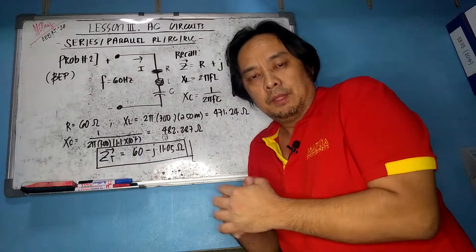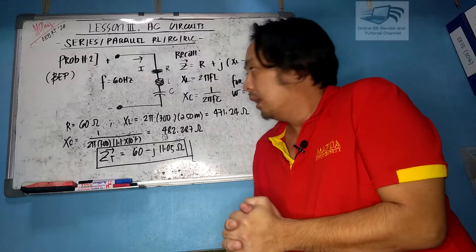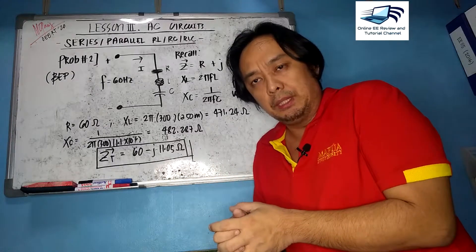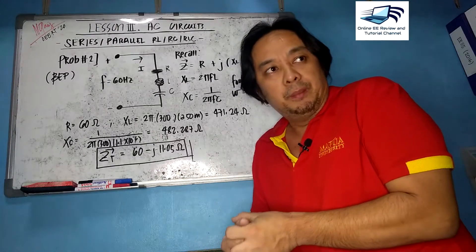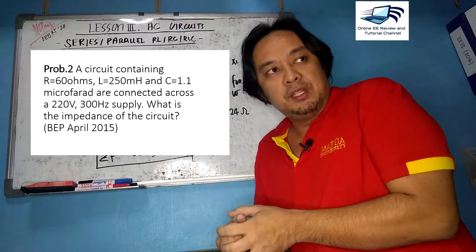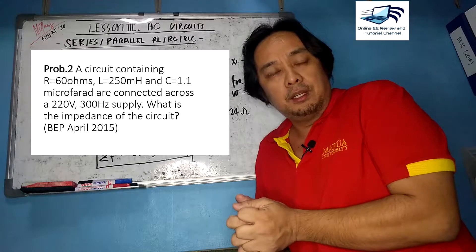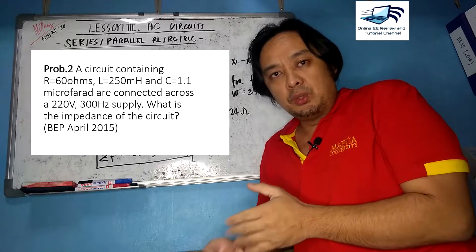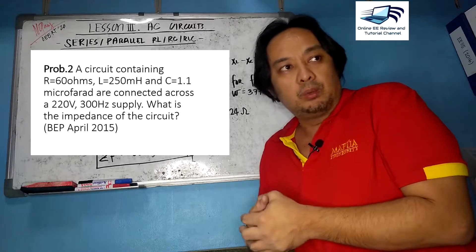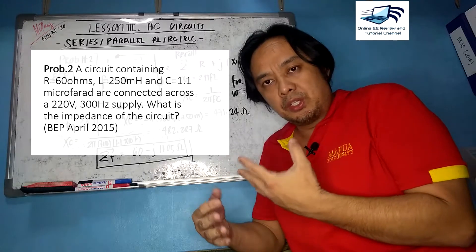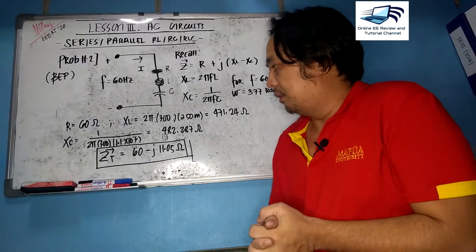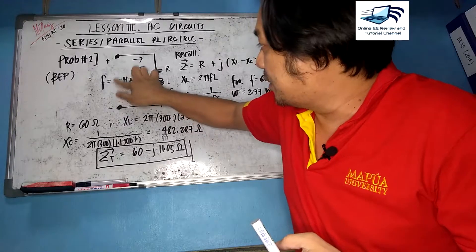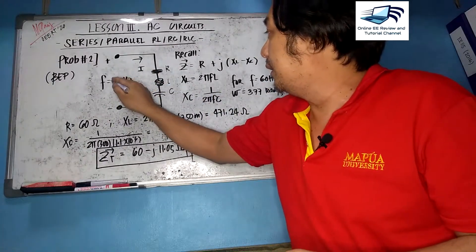Now let us continue with Problem 2, which is correlated to Problem 1 and is a former board exam problem. A circuit containing a resistance of 60 ohms, inductance of 250 millihenry, and capacitance of 1.1 microfarad are connected in series across a 220-volt, 300-hertz supply. What is the impedance of this circuit in complex notation? The frequency here is 300 hertz instead of 60 hertz.